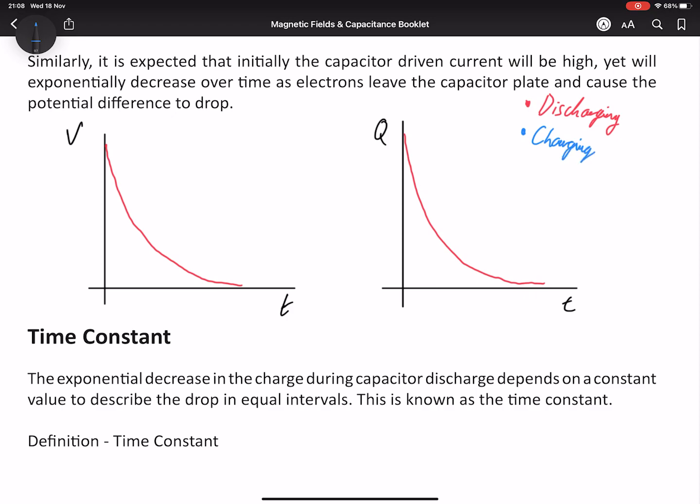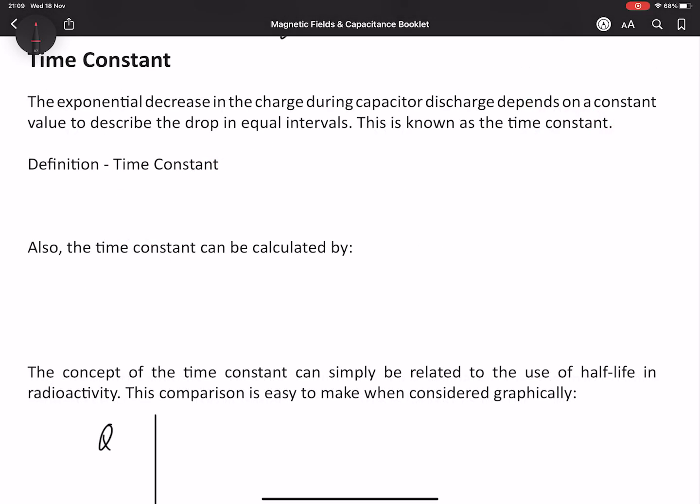However, if we look at this for charging, we obviously start with zero potential difference and zero charge. So we will gradually increase the potential difference present until no more can be collected and it plateaus. The same will be true for the charge. As less electrons can be added to the negative terminal, it will gradually reach a stopping point. So these graphs are obviously inverted, but at least identical between potential difference and charge.